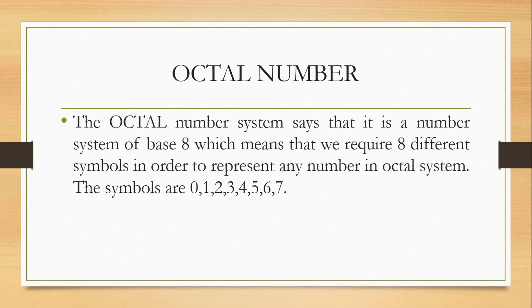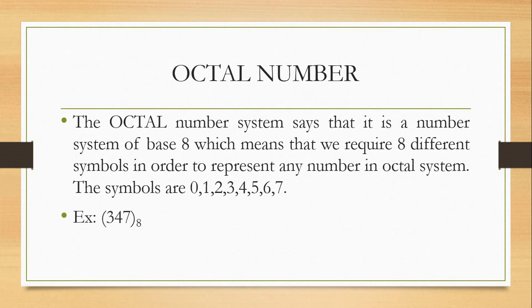The octal number system has a base of 8, which means we require 8 different symbols to represent any number in octal. The symbols are 0, 1, 2, 3, 4, 5, 6, 7. The base is the number of digits present in the number system — in octal we have 8 digits, that's why the base is 8. Here is an example: 347 base 8 is an octal number. Now let's see the conversion between decimal to octal and octal to decimal.